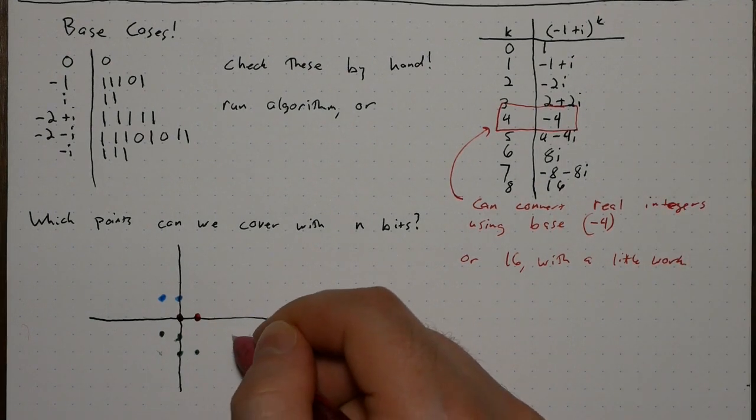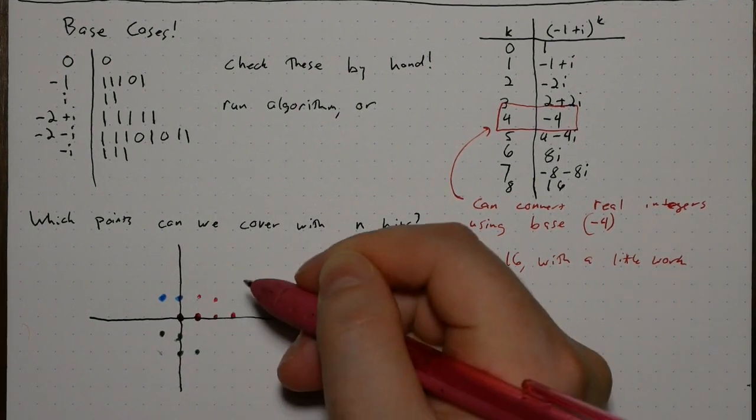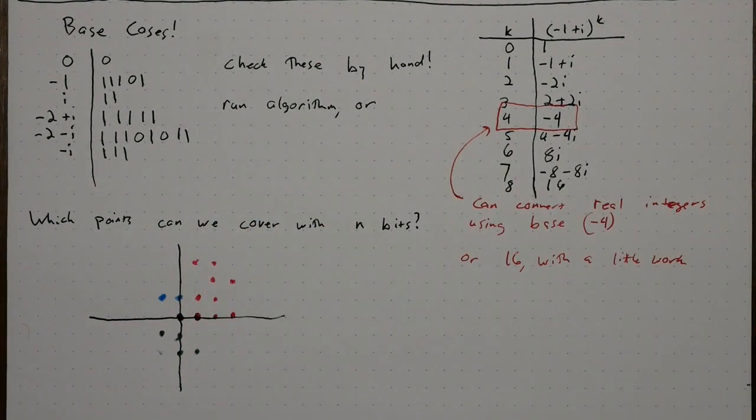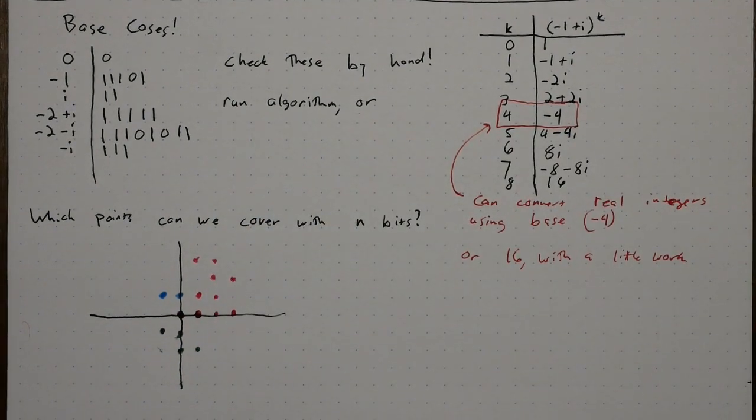A fourth bit gets all of the previous points, and all of those points plus 2 plus 2i. The shape is getting interesting, but I'm getting tired of doing it by hand, so let's write a program to do it for us.